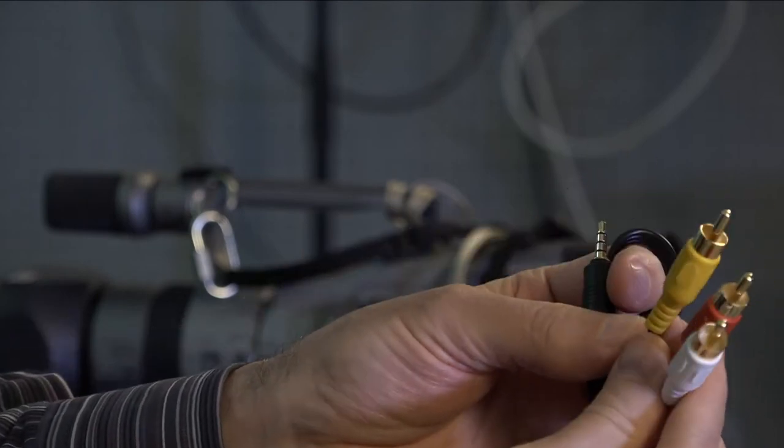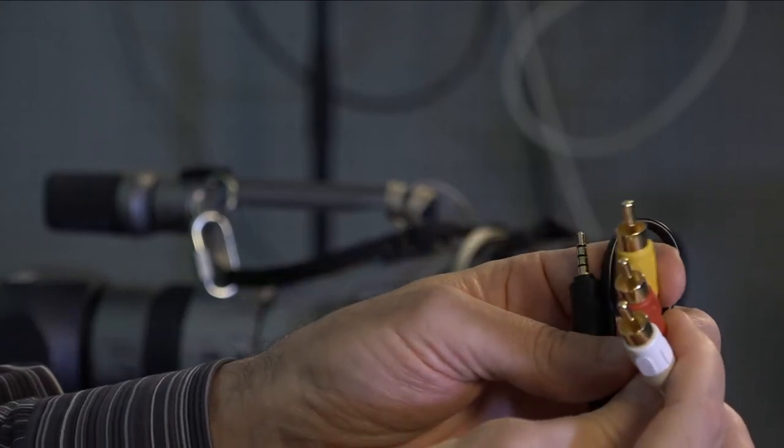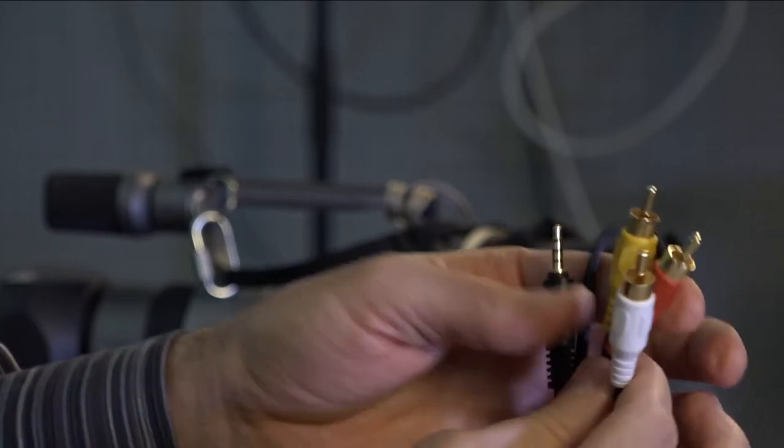What are these? These are the RCA jacks or in Taiwan or China we often call them AV, AV jacks. So you can use these to convert. Usually this will be out of your camera and into a television or into another recording device. But you can also use them in the other direction from a microphone and into your camera.